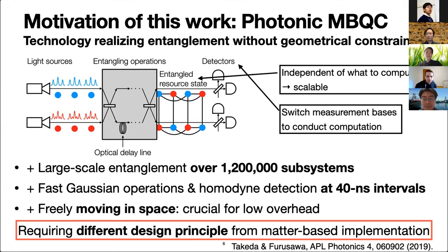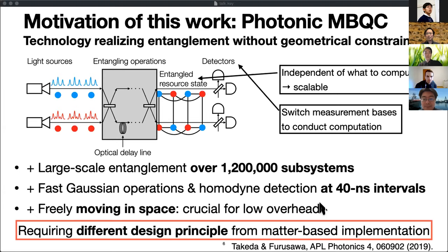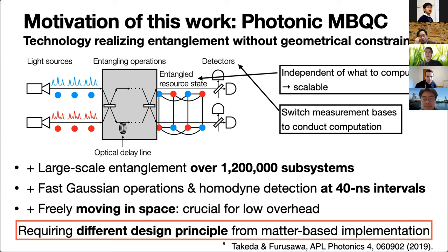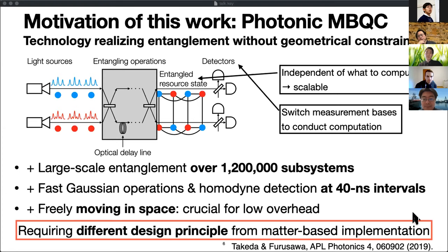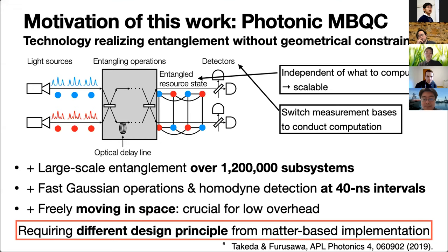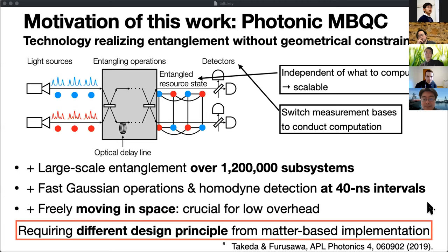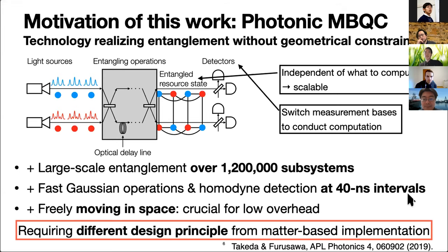A technical difficulty in the implementation may arise from introducing non-Gaussianity in preparing the photonic resource state. Therefore, this architecture may require some completely different designing principle from matter-based implementation of quantum computation, such as superconducting qubits. This technological progress is one of the motivations for our investigation of new entanglement structure suitable for this kind of setting without geometrical constraints.